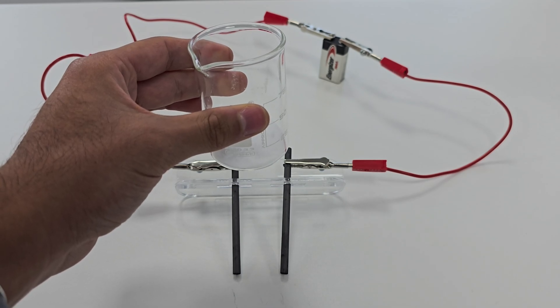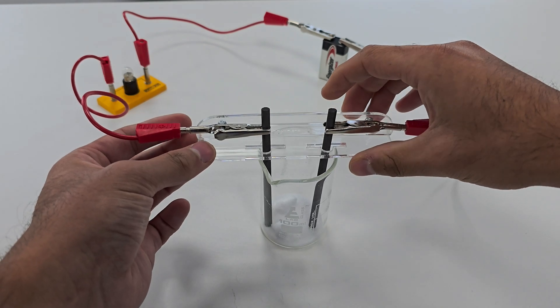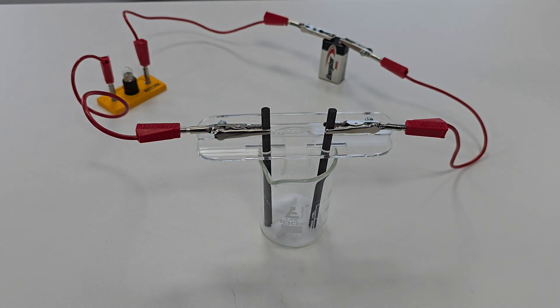Let's see what happens when we lower the electrodes into the solid. As you can see the light bulb does not light up, confirming that the solid sodium chloride does not conduct electricity.